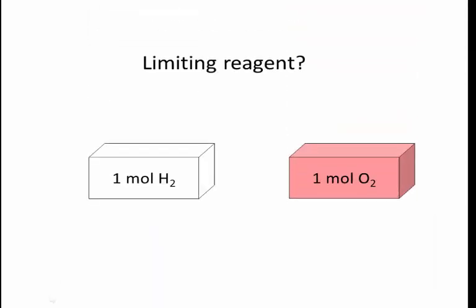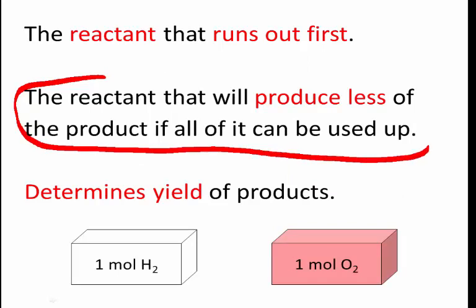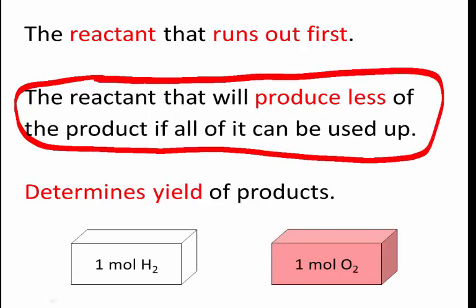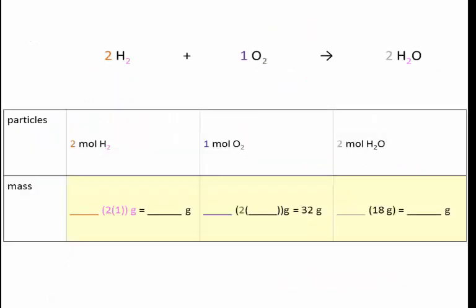We reasoned through that with easy numbers, so hopefully that wasn't too difficult. But sometimes in a question we don't have such easy numbers, so it's a little difficult to reason through. We need a method to calculate which is the limiting reagent. So we're going to use such a method now to solve the problem again: if we have one mole of hydrogen and one mole of oxygen reacting together to produce water, which is the limiting reagent? We're going to test which one produces less of the product if all of it can be used up. First we need our reaction ratios, which we get from the coefficients: 2 moles is to 1 mole is to 2 moles.